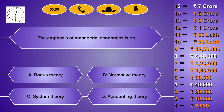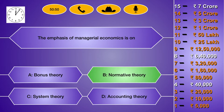The emphasis of managerial economics is on: option A, bonus theory; option B, normative theory; option C, system theory; option D, accounting theory. The right answer is option B: normative theory.